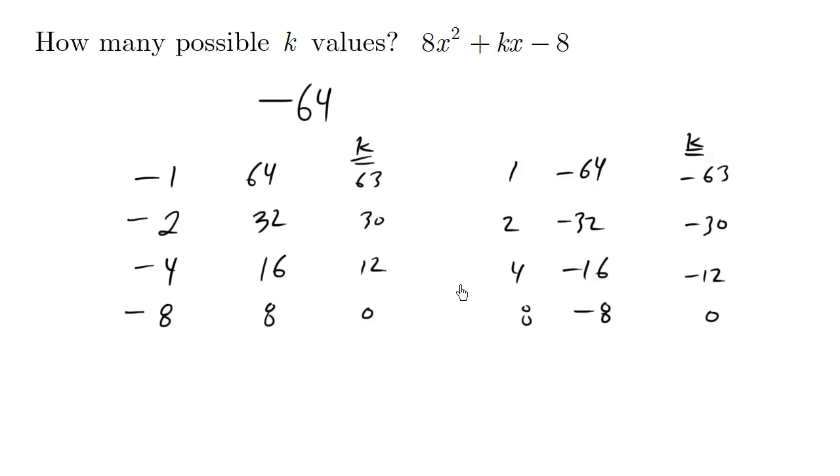And in this case, it's 0 again. So in terms of unique k value solutions, it's going to be 4 times 2 minus 1, which is going to be 7. There are 7 possible k values.